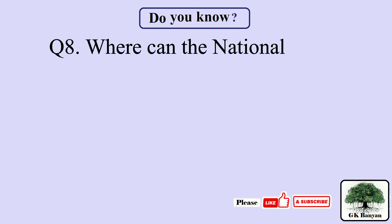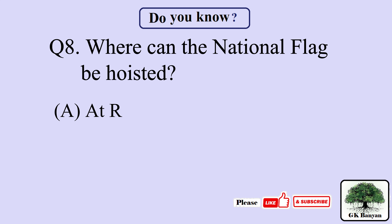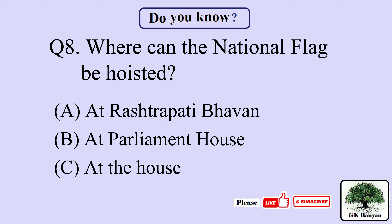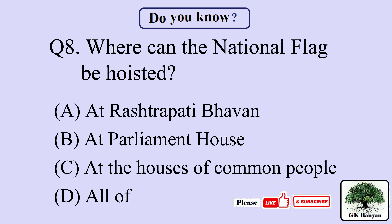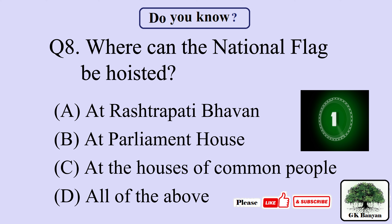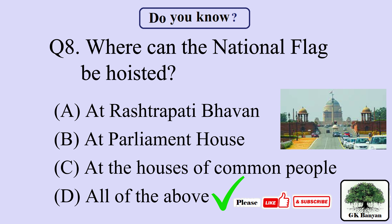Question 8. Where can the national flag be hoisted? Your options are A. At Rashtrapati Bhavan, B. At Parliament House, C. At the Houses of common people, D. All of the above. The right answer is D. All of the above.